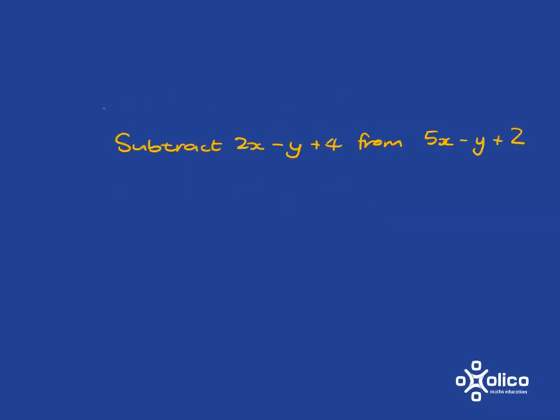Okay, if I'm given this question to do where I need to subtract 2x - y + 4 from 5x - y + 2, then what I first need to do is make sure I get my subtraction the right way around. Note that I'm subtracting or taking away this from this, so I start with this.